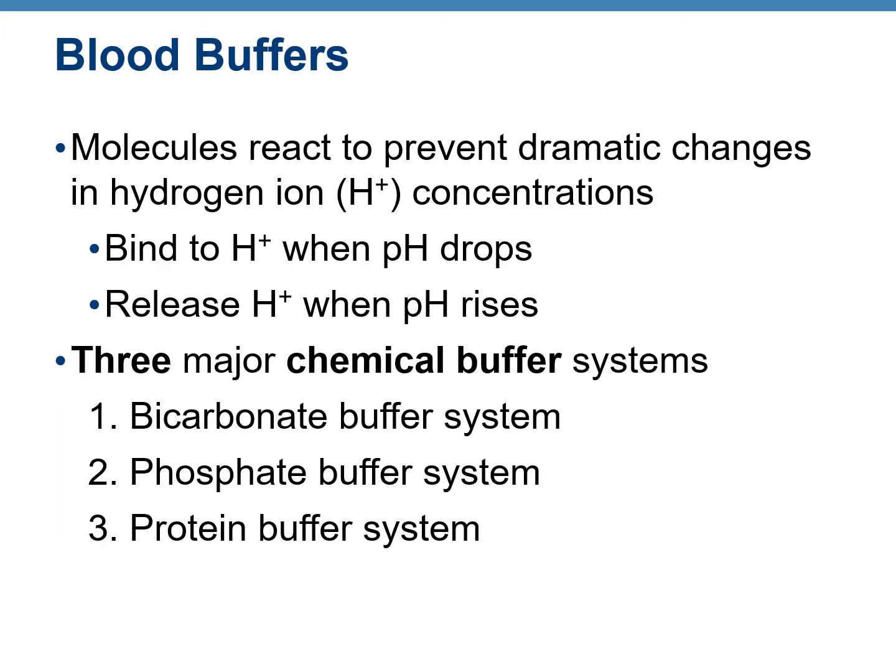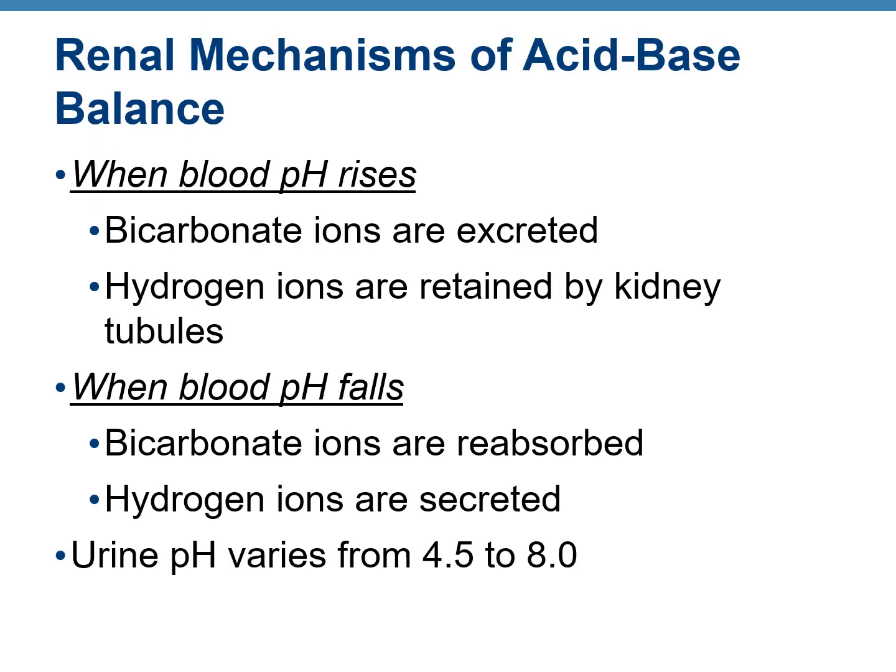Buffers are molecules that react to stop dramatic changes in hydrogen ion concentrations, keeping pH at a constant level. When pH drops they raise it; when pH rises they lower it. There are three major chemical buffer systems: the bicarbonate buffer system, the phosphate buffer system, and the protein buffer system. When blood pH rises, the kidneys retain hydrogen ions to increase acidity. When blood pH falls and blood becomes more acidic, hydrogen ions are secreted.